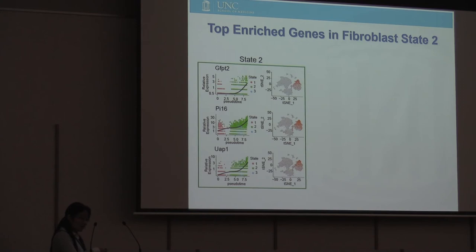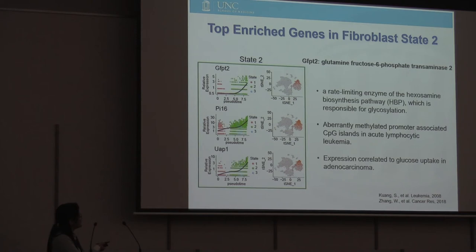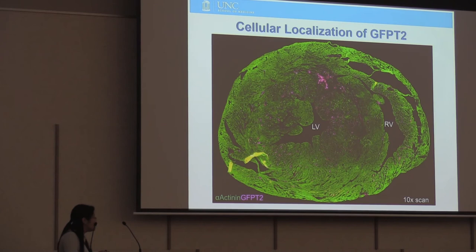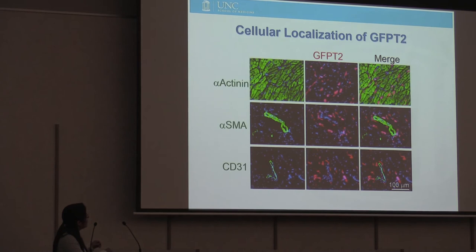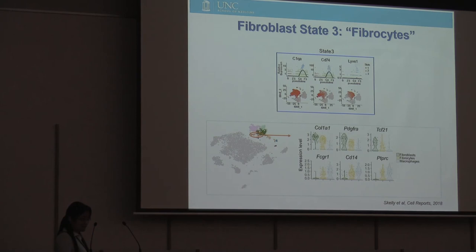When we looked at the state two gene, the most enriched gene was also very surprising. The top gene is FUT2, which is involved in glycosylation — really has nothing to do with known fibroblast genes, but is mainly studied in the context of cancer. What we find is that it is also enriched very specifically in cardiac fibroblasts. You can see it in the left ventricle and also in the right ventricle, partially co-localizing with Vimentin, and never co-localizing with cardiomyocytes, smooth muscle, or endothelial cells. This is really the second step towards validating our hypothesis.